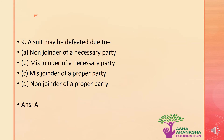Now let's move to the next question: a suit may be defeated due to which of the following reasons? The options are A. Non-joinder of the necessary parties, B. Mis-joinder of the necessary parties, C. Mis-joinder of the proper party, or D. Non-joinder of the proper party. The correct answer is option A: due to non-joinder of a necessary party, a suit may be defeated.